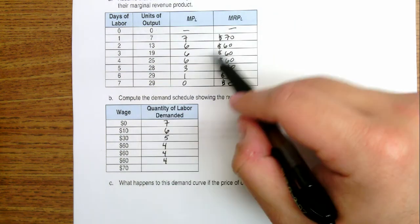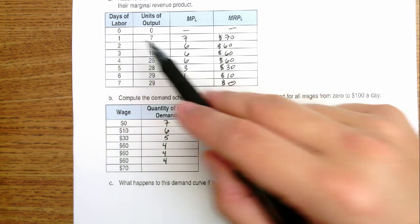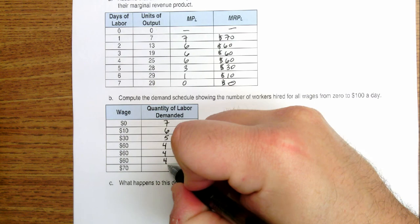And then if the wage rate is 70, then I'd only want to hire one because at one worker the marginal revenue product is 70, and that would equal the wage. So I'd want one worker there.